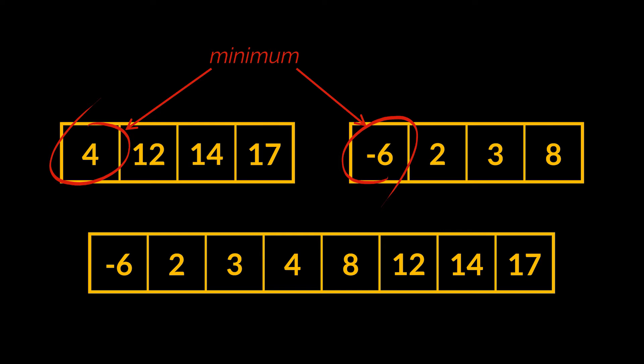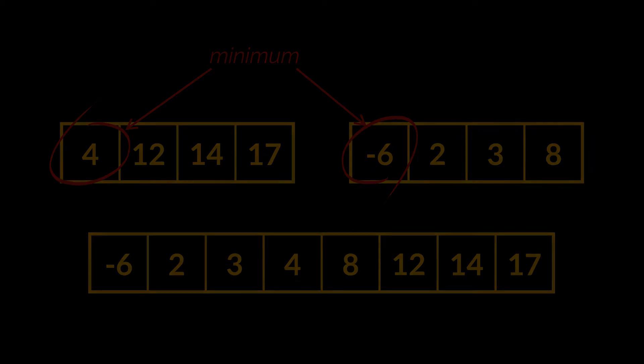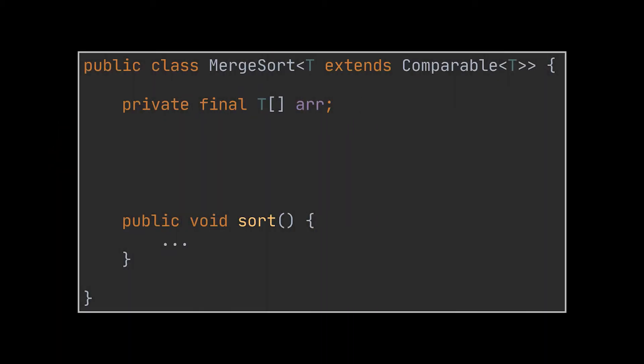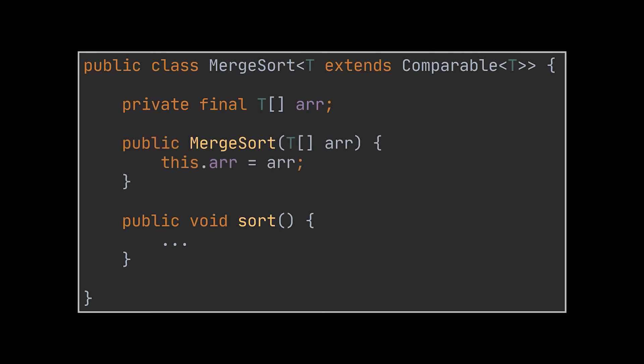Let's move on to the implementation and see what merge sort looks like in code. First, let's look at the class definition and constructor — it is pretty similar to the other sorting algorithms we've made. It is generic as usual, and the generic parameter extends the Comparable interface, as we will need to compare elements inside the subarrays to each other. The array we need to sort is passed to the constructor and assigned to a variable in our class.